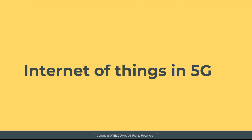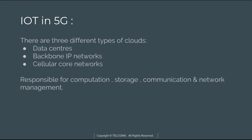We can have more sophisticated cellular core networks. We can have three different types of clouds: data centers, IP backbone, IP networks, and cellular core networks. These are responsible for computation, storage, communication, and network management.